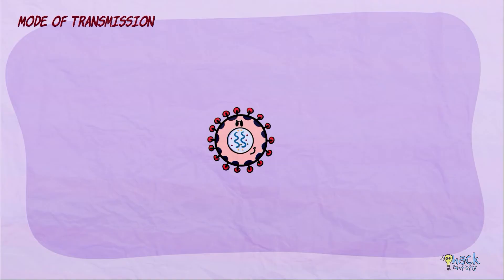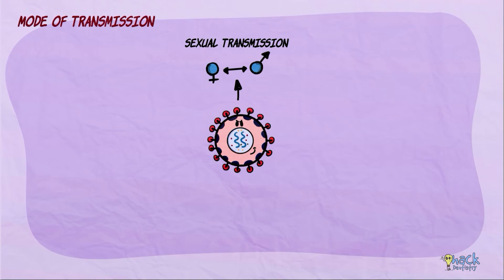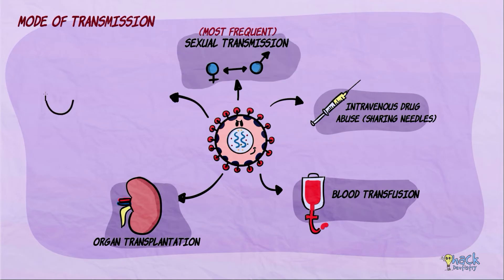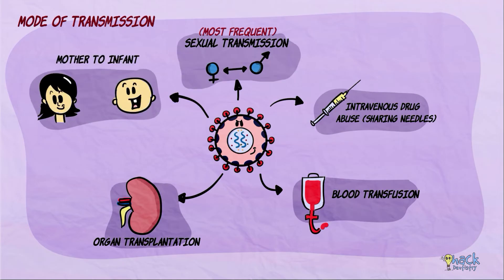There are various different modes of transmission for the HIV virus. Sexual transmission by far makes up the most frequent mode of infection, followed by intravenous drug abuse via sharing of needles, blood transfusion, organ transplantation, as well as mother to infant.